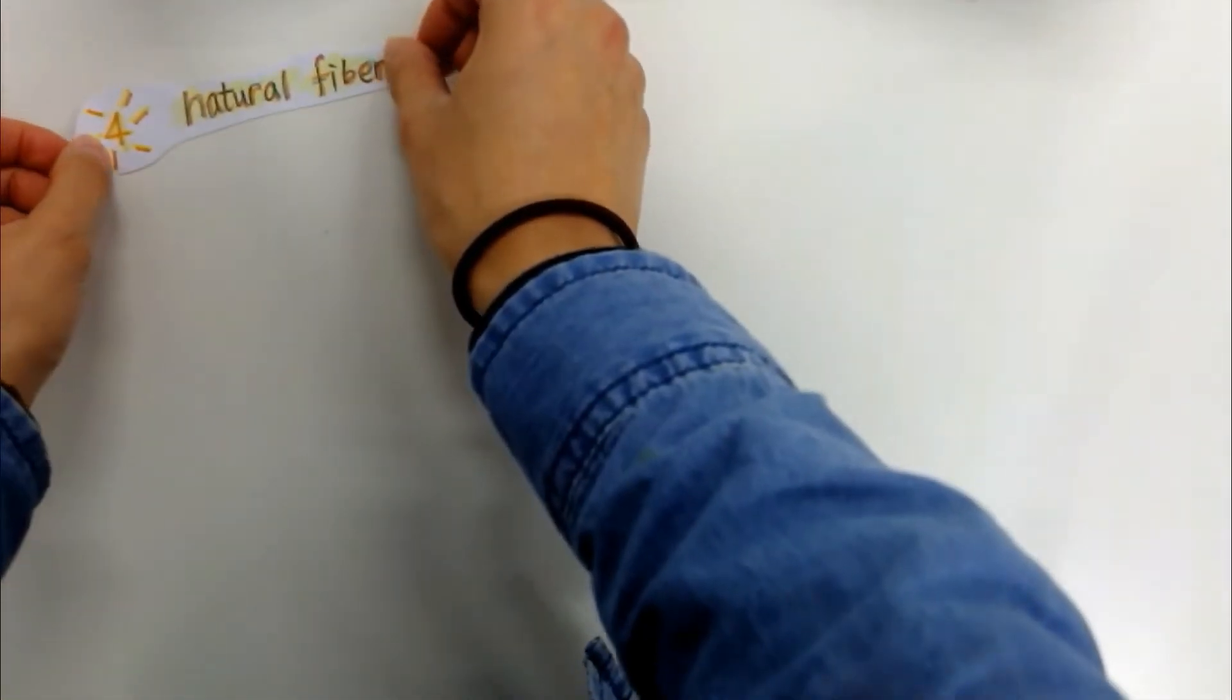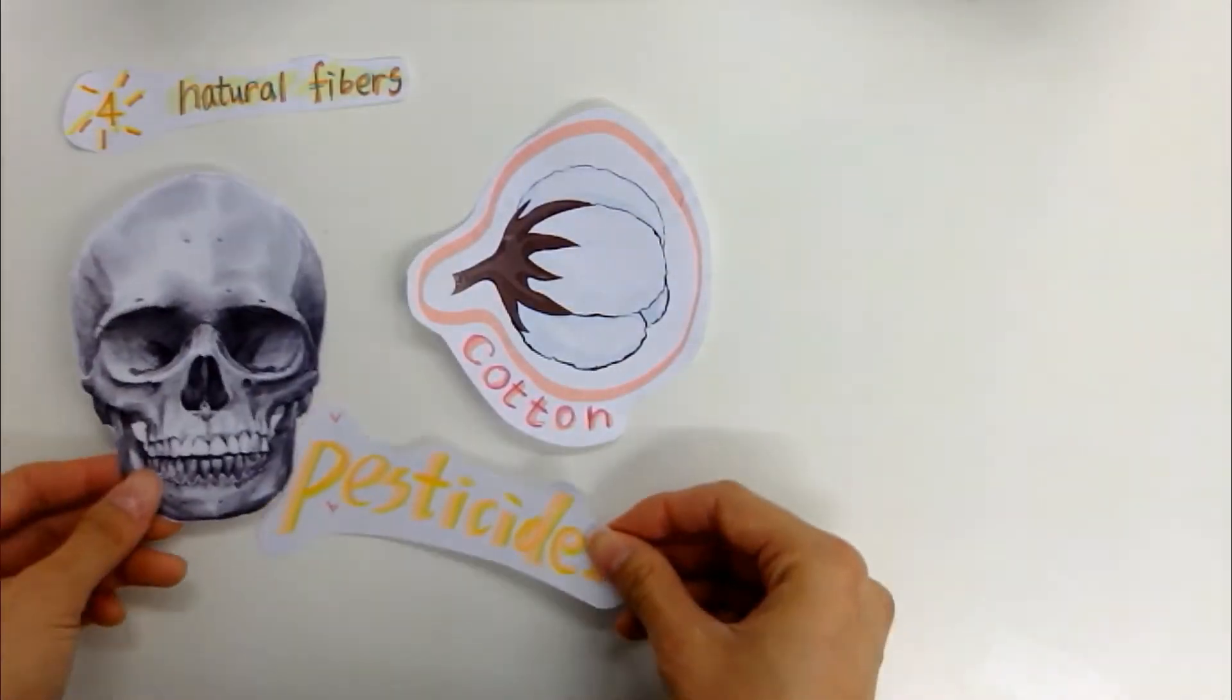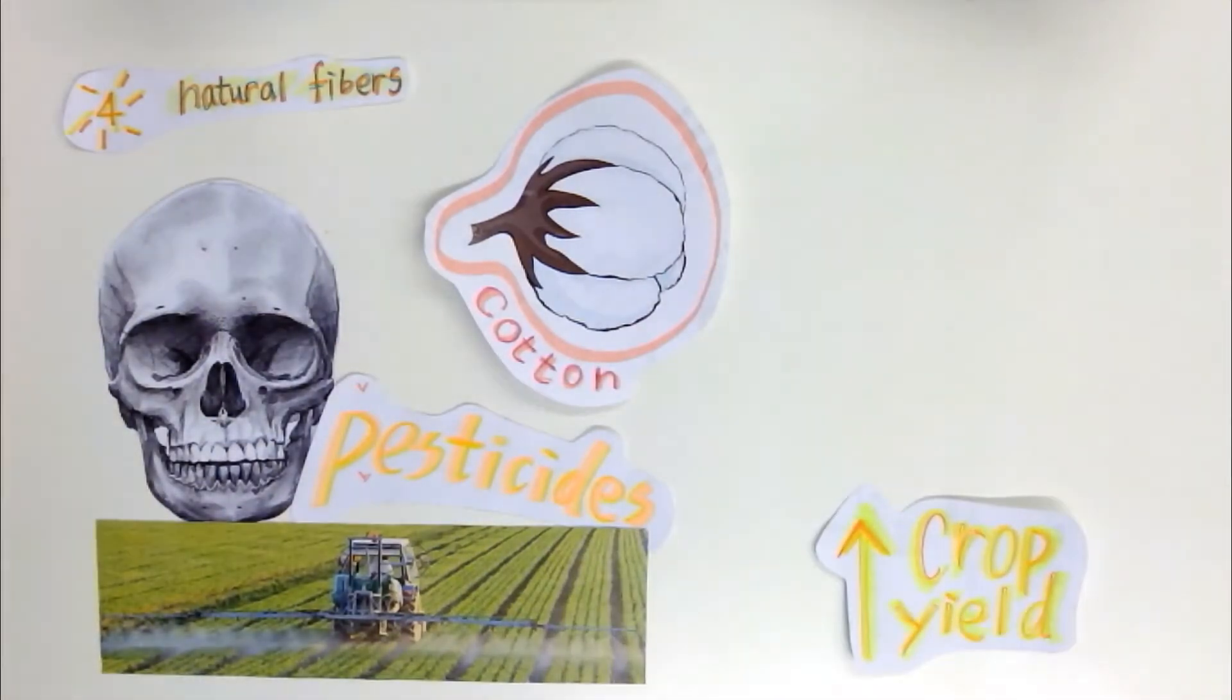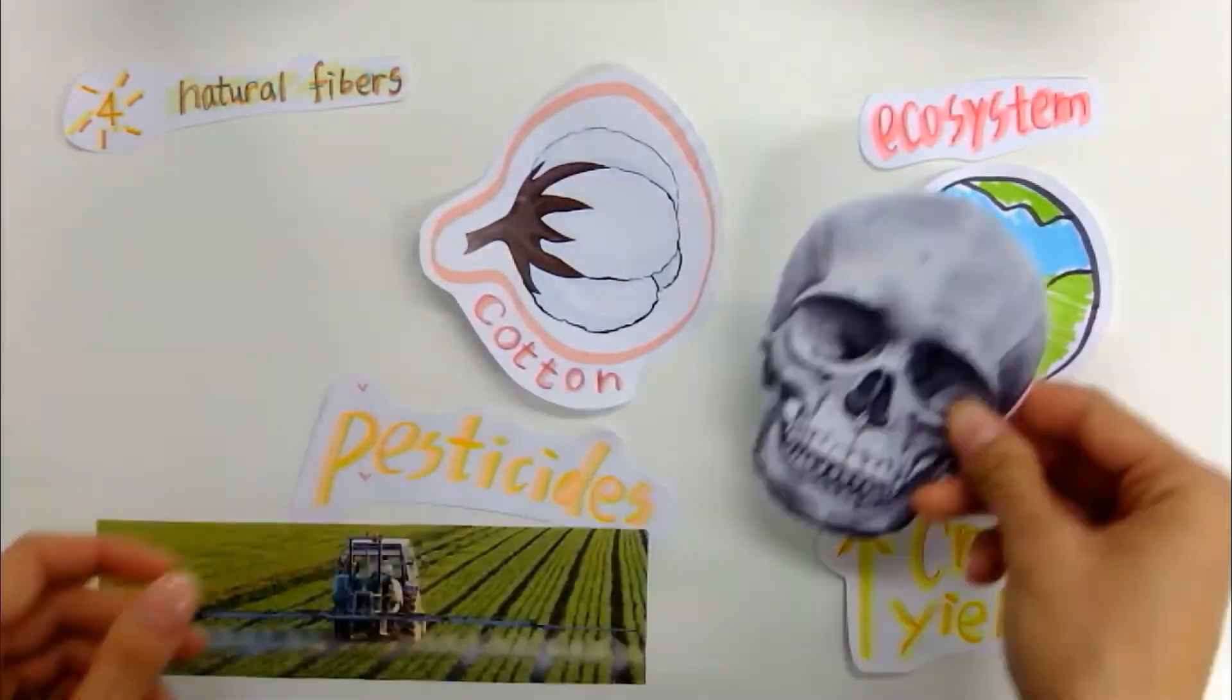The fourth impact stems from the use of pesticides when cultivating natural fibers. Large amounts of pesticides are often used to increase crop yield of cotton, one of the most popular and versatile fibers used in clothing manufacture. Pesticide application can unfortunately injure non-target plants and animals, disrupting the natural balance in the ecosystem.